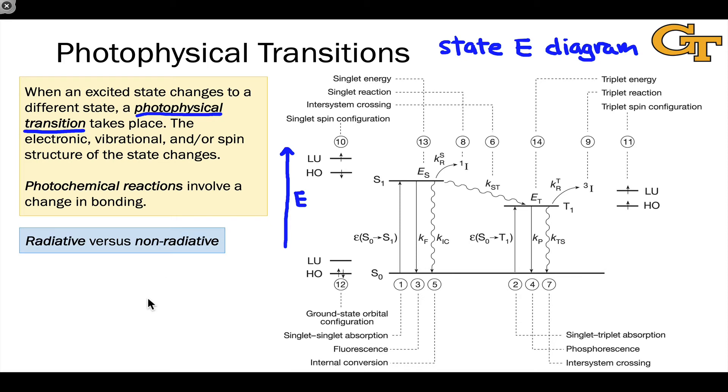There are a wide variety of photophysical transitions. The first is this distinction between radiative and non-radiative. Radiative transitions involve the absorption or emission of a photon, and they're represented on the diagram using solid lines. One is the absorption of a photon. Three is the emission of a photon from the S1 singlet state. We can also have absorption and emission from or to triplet states. These are radiative transitions because a photon is absorbed or emitted.